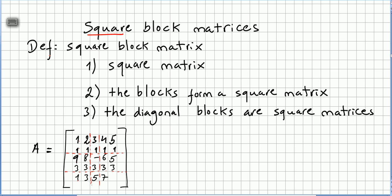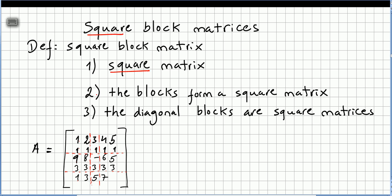We are going to define what the square block matrix is. The definition of a square block matrix is: 1. The matrix has to be square, that's the title square block, square. 2. The blocks, and I will explain what the block is later, the blocks form a square matrix. And third condition, the diagonal blocks are square matrices.